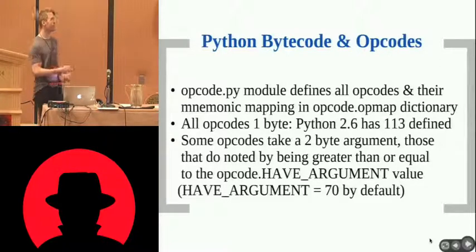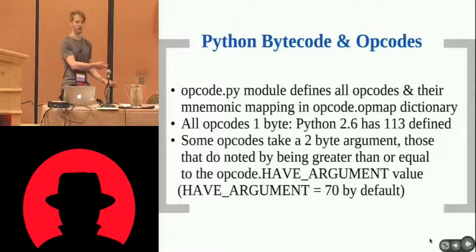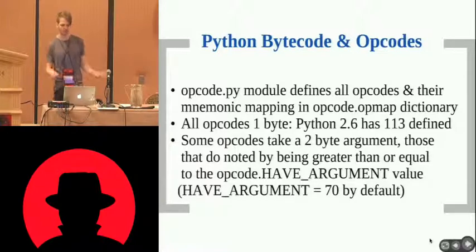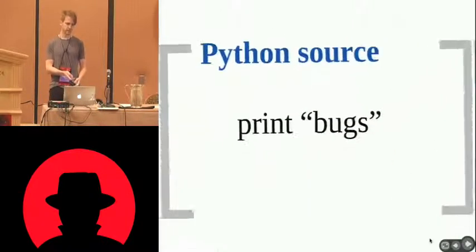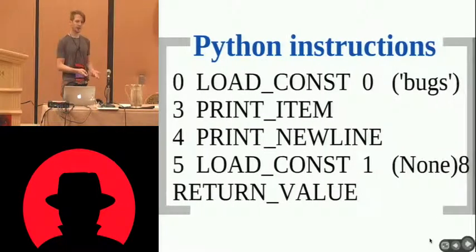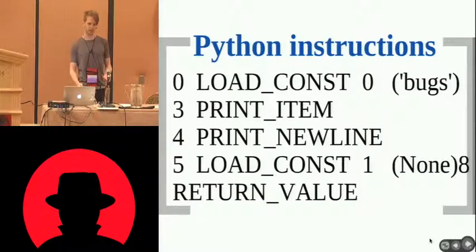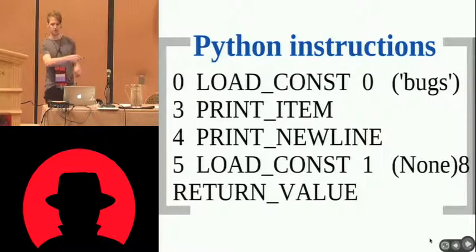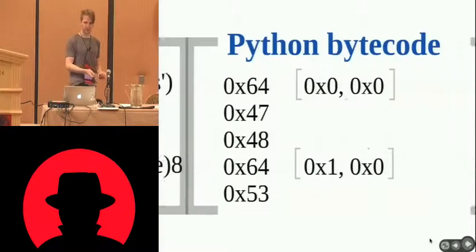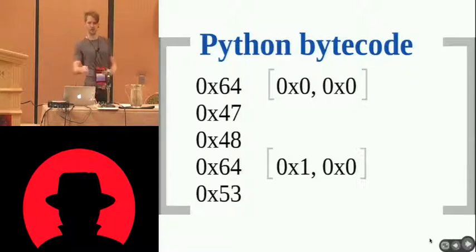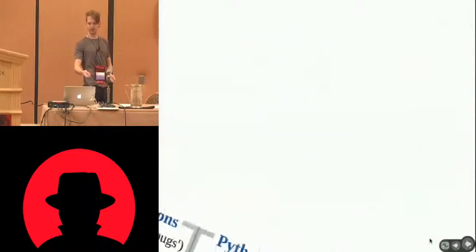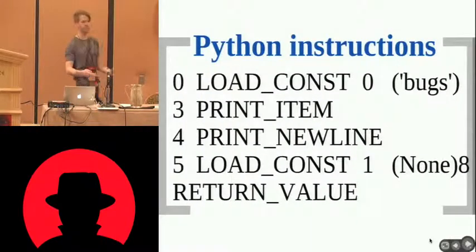Optionally, an opcode can have an argument. All arguments are a two-byte argument. The opcodes which have arguments are specified by a 'has argument' attribute, giving the value above which all opcodes have arguments. So if we have some Python source which is just 'print bugs,' if we disassemble this — using the dis module from Python itself — you can see the bytecode instructions and the two instructions which have arguments. Looking in the co_code object, these are the bytes which come out. You can see 64 represents LOAD_CONST, 47 for PRINT_ITEM, etc. It's a very, very simple representation of a language.